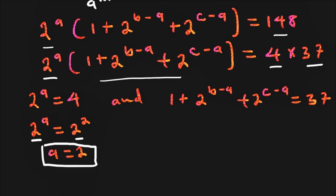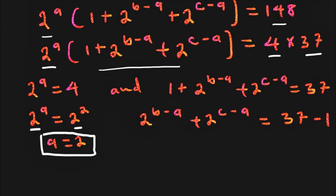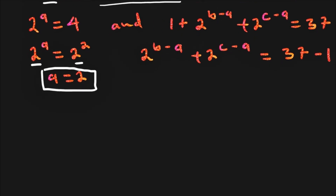Now we work on the other part of the equation. We take the remaining sum equal to 37, and move 1 to the right hand side so that 2 power b minus a plus 2 power c minus a equals 36. Since we now have the value of a, we substitute: 2 power b minus 2 plus 2 power c minus 2 equals 37 minus 1, which is 36.